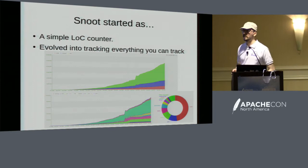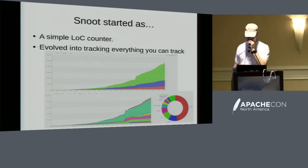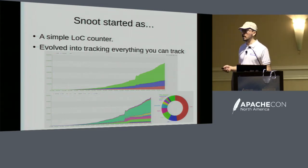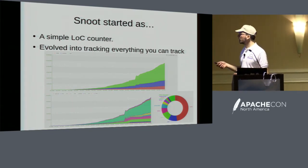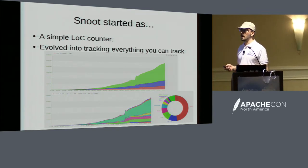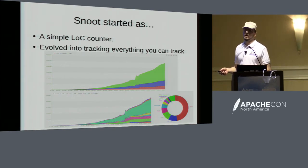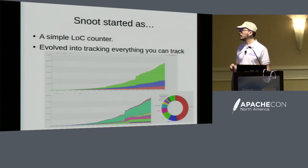It started as a simple line of code counter. We got a request from a large organization that said they would like to count all the lines of code in their repositories. We started counting all the lines, then wanted to show graphs of how stuff evolved over time. We started making charts and then said to ourselves, why stop at code? Why not pick out bugs, email, online messaging, and changes in communities — and then it kind of evolved.